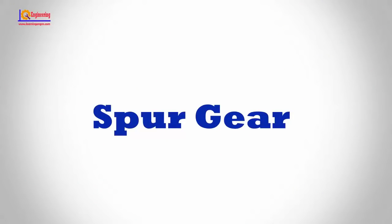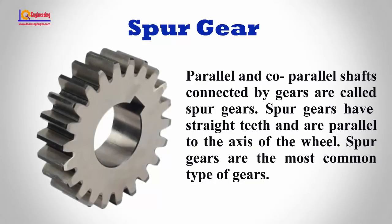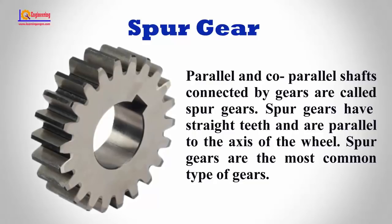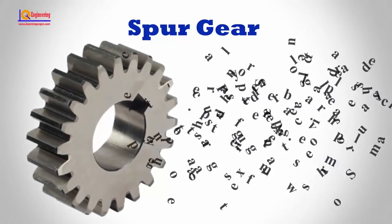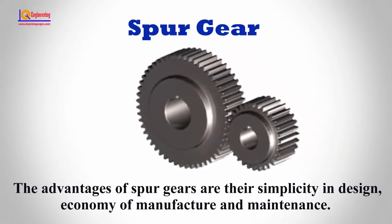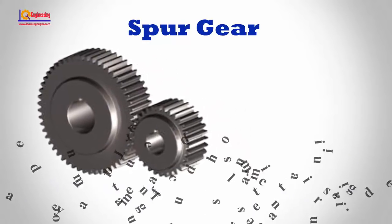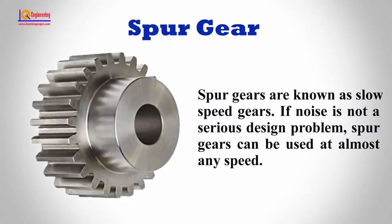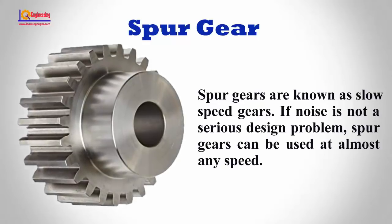Spur Gear. Parallel and co-planar shafts connected by gears are called spur gears. Spur gears have straight teeth and are parallel to the axis of the wheel. Spur gears are the most common type of gears. The advantages of spur gears are their simplicity in design, economy of manufacture and maintenance. Spur gears are known as slow speed gears, but if noise is not a serious design problem, spur gears can be used at almost any speed.